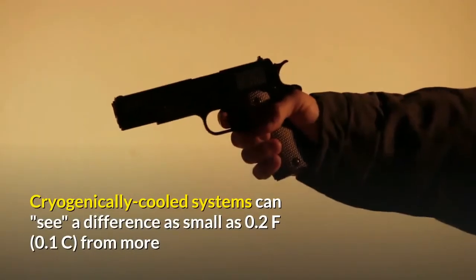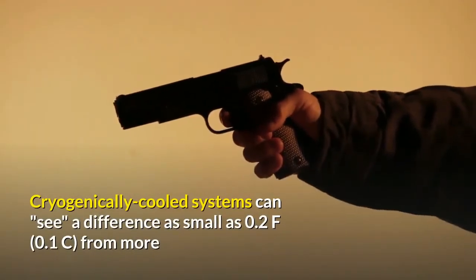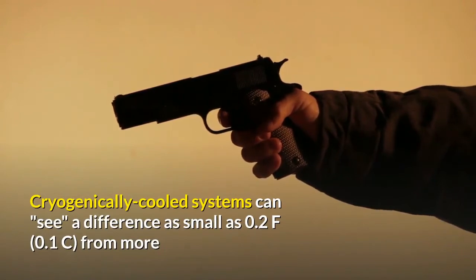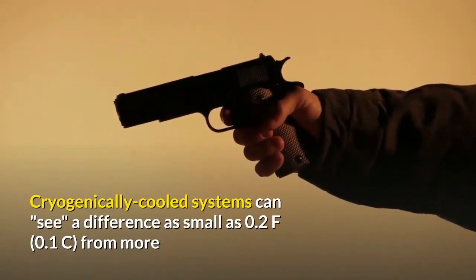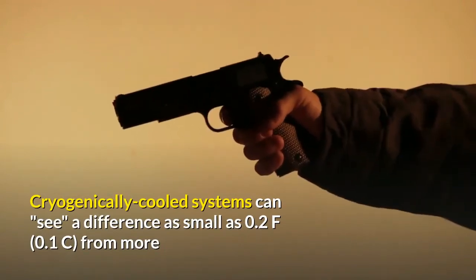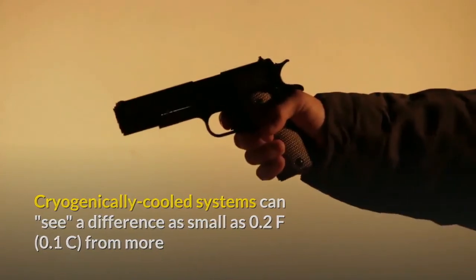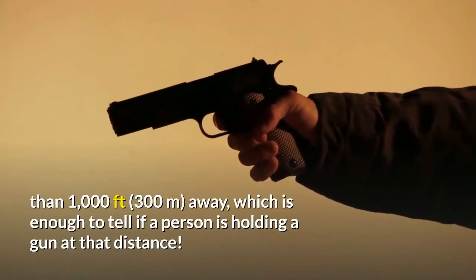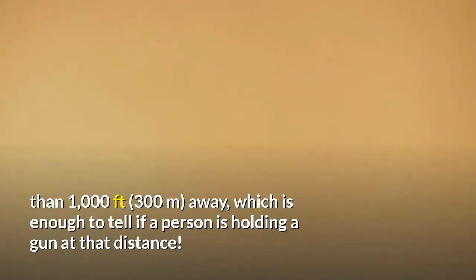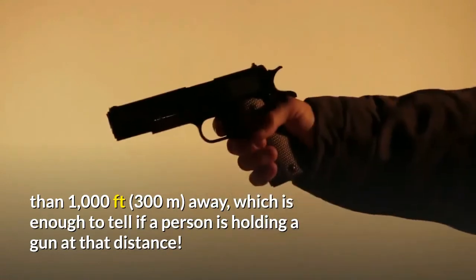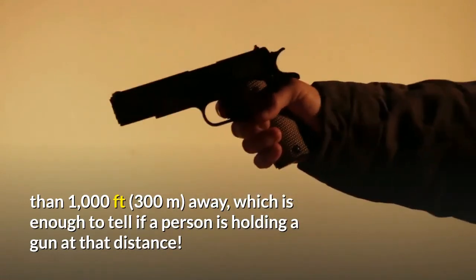Cryogenically cooled systems can see a difference as small as 0.2 degrees Fahrenheit from more than 1,000 feet away, which is enough to tell if a person is holding a gun at that distance.